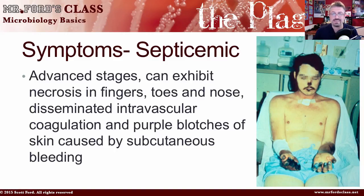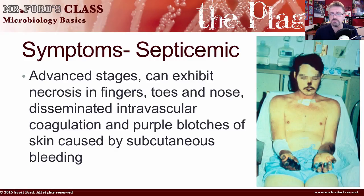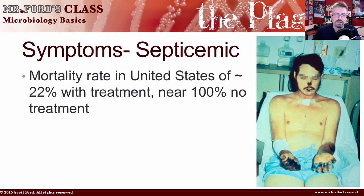You can also get something called disseminated intravascular coagulation, or DIC, where blood clots within the blood vessels — not a good thing. This leads to purple blotches of skin caused by subcutaneous bleeding. The mortality rate in the United States is approximately 22% with treatment. Without treatment, the fatality rate is 100%.